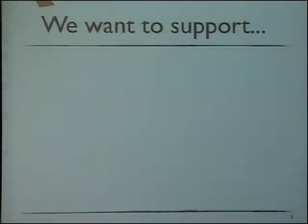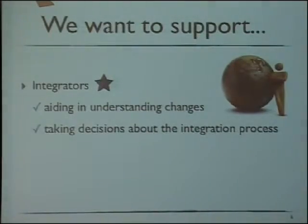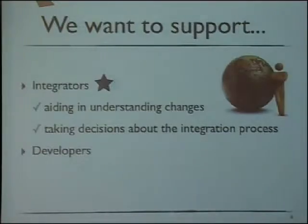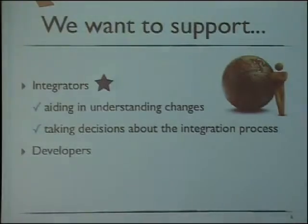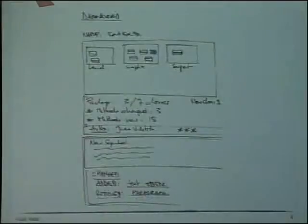We want to support integrators as our initial idea, aiding in understanding changes and taking decisions about the integration process. They get changes from different developers and shouldn't struggle before merging. For developers, understanding changes too is important — a developer starts changing one class then another, and at the end doesn't realize exactly what he changed or how those changes impact the whole structure of the system. Torch could also support them in controlling changes before publishing.